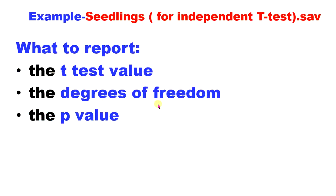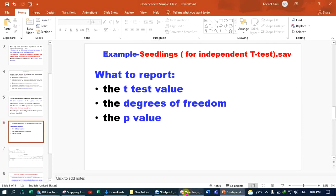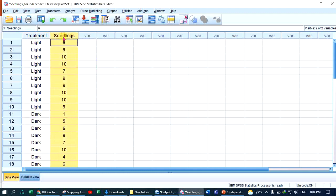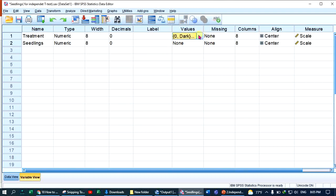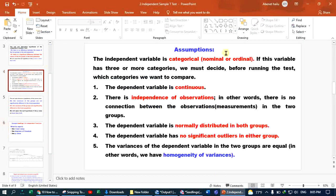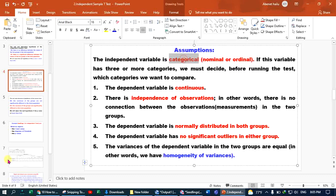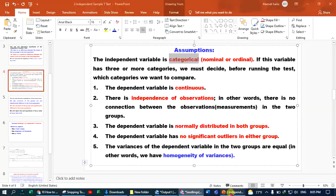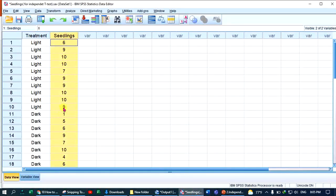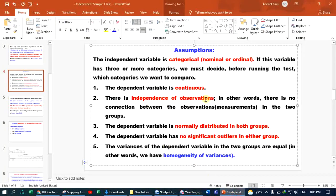For the example, in the sample data there are two observations: seedlings with continuous growth. One group had a certain treatment under light conditions and the other under dark conditions. The independent variable is categorical: light and dark. The dependent variable should be continuous growth.